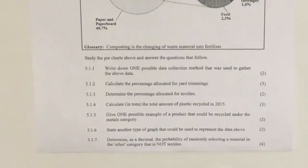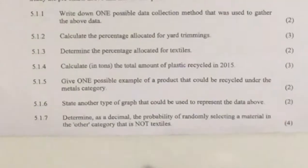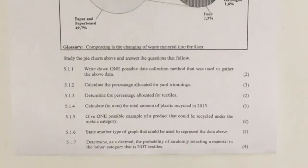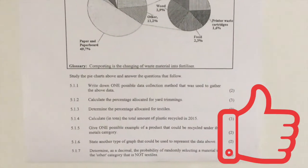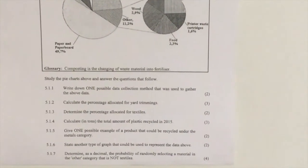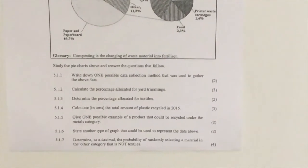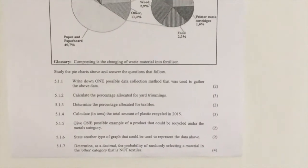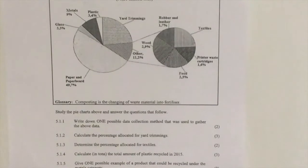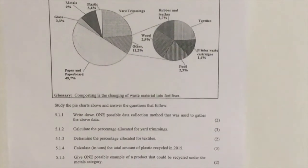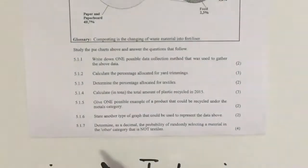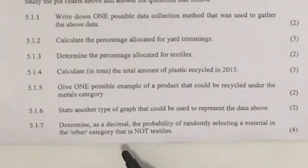Question 5.1.6: state another type of graph that could be used to represent the data above. A stacked bar graph could work — with a regular bar graph you won't show the 100% relationship used in a pie chart, but with a stacked bar graph you can see that plastic will have a smaller portion and paper and paperboard will have a bigger portion. The correct answer would be a stacked bar graph.